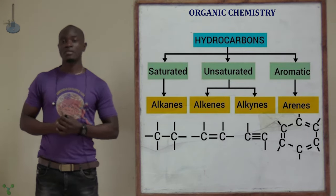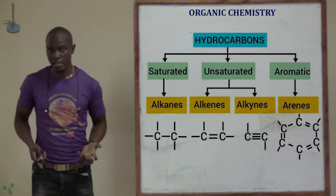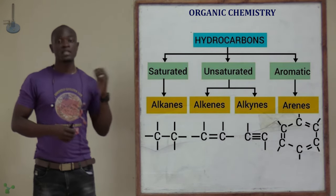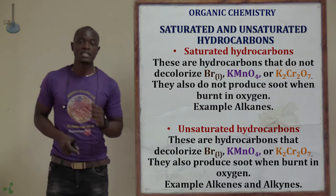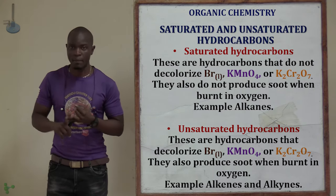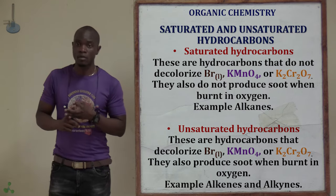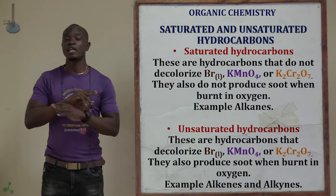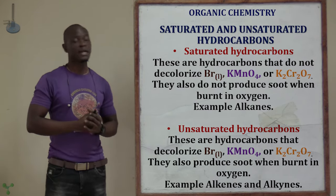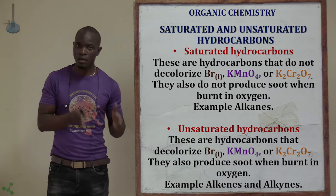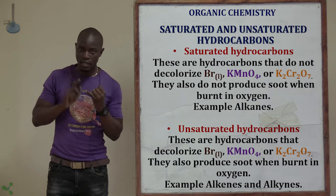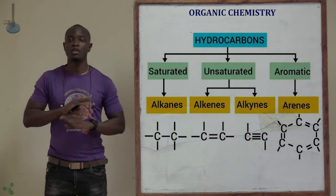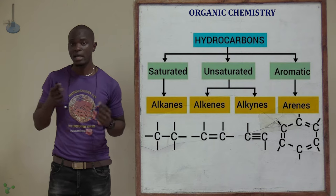Let's also define saturated and unsaturated hydrocarbons as well as aromatic hydrocarbons. For the saturated hydrocarbons, these are hydrocarbons which cannot discolorize bromine water, cannot discolorize potassium permanganate, and cannot discolorize potassium dichromate. Also, the saturated hydrocarbons, when burnt, do not produce soot. These hydrocarbons which cannot discolorize these reagents and do not produce soot when burnt are referred to as saturated hydrocarbons.